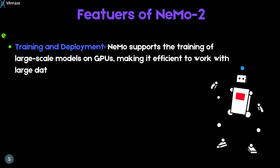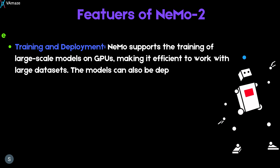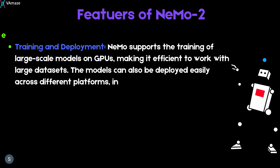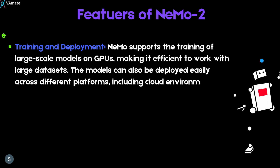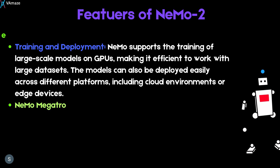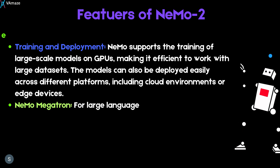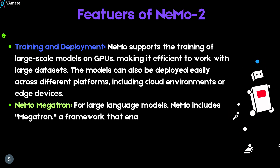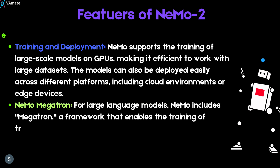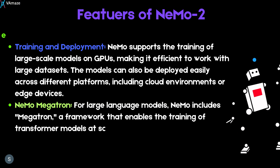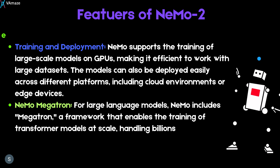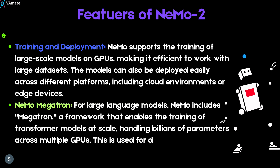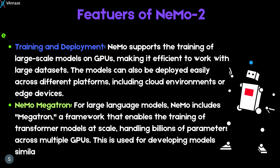Models can be deployed easily across different platforms including cloud environments, edge services, or local data centers. Nemo also includes Megatron, a framework that enables the training of transformer models at scale, handling billions of parameters requiring multiple GPUs. This is used for developing models similar to GPT-3 and GPT-4 at any scale.